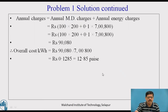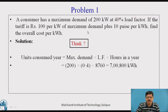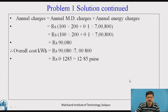We can calculate the annual charges using the given tariff. The annual maximum demand charges will be Rs. 100 per kW of maximum demand into 200 kW, plus 0.1 rupees into total number of units generated. So the annual charges come out to be Rs. 90,080. When we divide by the total number of units generated, that is 7,800, we get the overall cost per unit of electrical energy as Rs. 1.285, that is Rs. 1 and 28.5 paise.